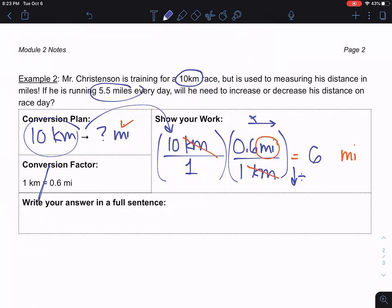So Mr. Christensen is going to have to increase his distance. He'll need to run six miles on race day.